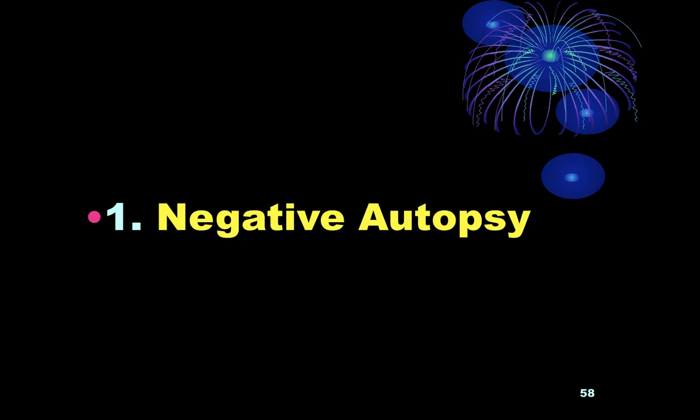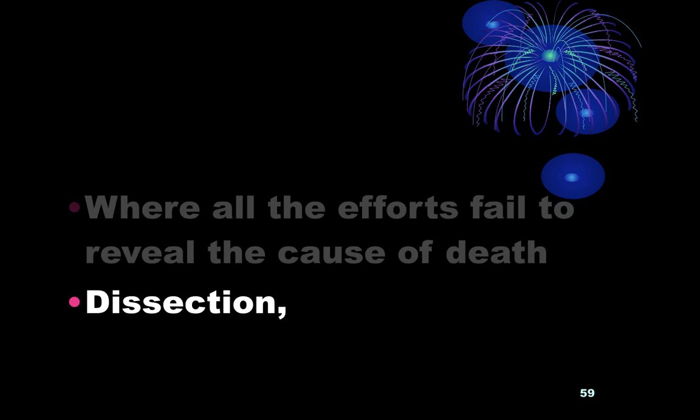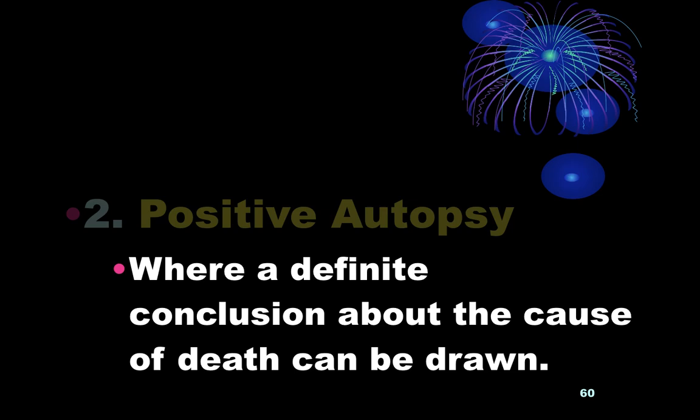Autopsy can be positive or negative. A negative autopsy is one where the cause of death cannot be determined despite all efforts — dissection, histopathological, biochemical, and all investigations fail to reveal the cause of death. A positive autopsy is one where a definitive conclusion about the cause of death can be drawn.